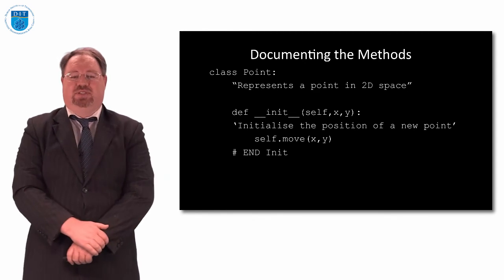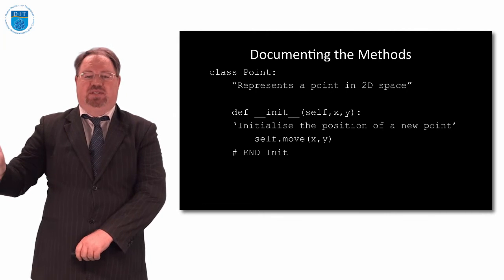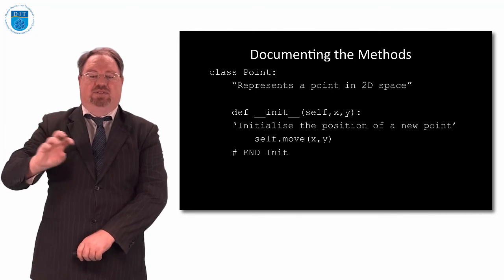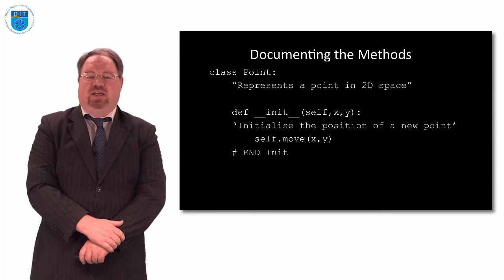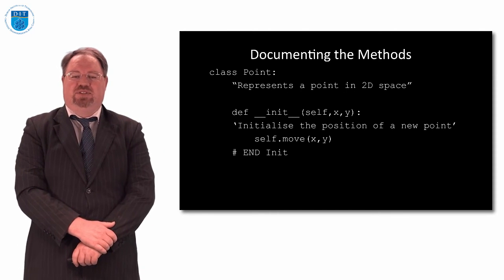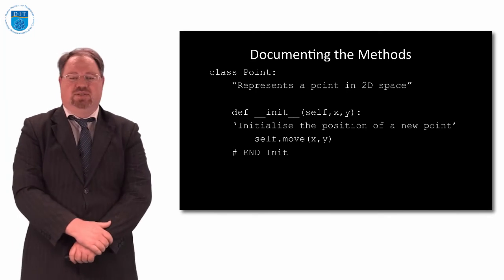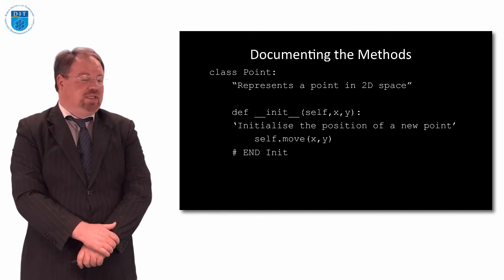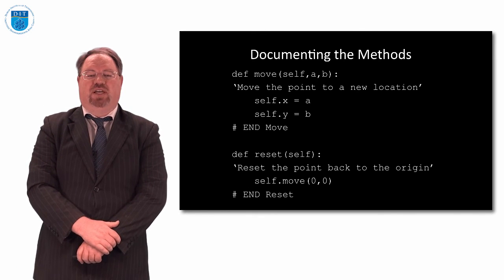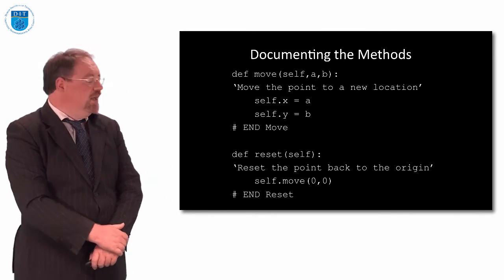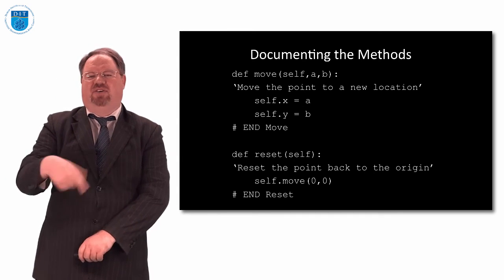So if I declare a class point, and then I just put in double quotes afterwards, represents a point in 2D space. I'm the initialization method. I have a single line which says, initialize the position of a new point, because that's what that method does. For the method called move, it says move the point to a new location, and the location is AB. And then for reset, it says reset the point back to the origin, 00.